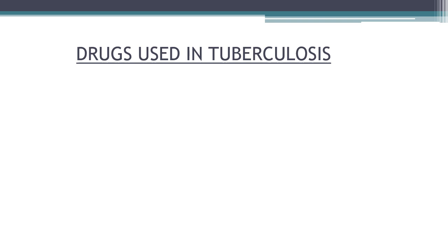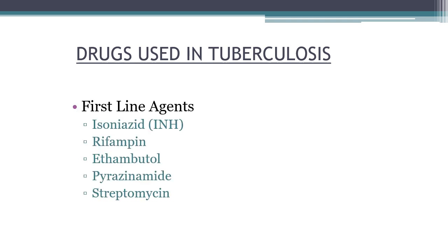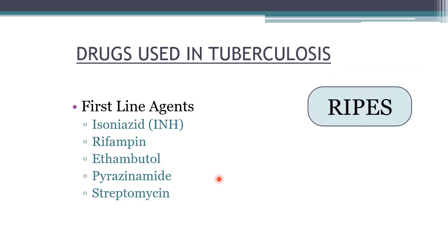The drugs used in tuberculosis are classified as first-line and second-line drugs. First-line drugs are more efficacious, have fewer adverse effects, and are cheaper than second-line drugs. The first-line agents are isoniazid, rifampin, ethambutol, pyrazinamide, and streptomycin. A mnemonic used to memorize these is RIPES: Rifampin, Isoniazid, Pyrazinamide, Ethambutol, and Streptomycin.